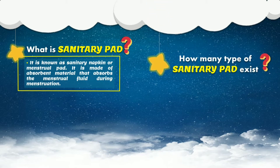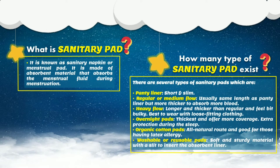How many types of sanitary pad exist? There are several types of sanitary pads. The first one is panty liner — it is a short and slim kind of pad. Next is regular or medium flow. This type of pad has the same length as panty liner but is thicker in order to absorb more blood.